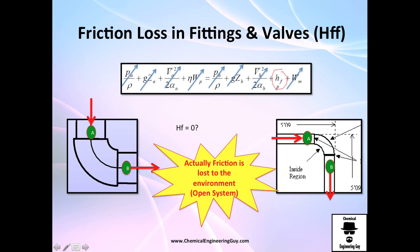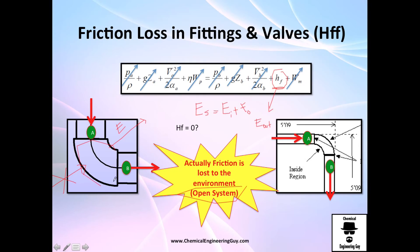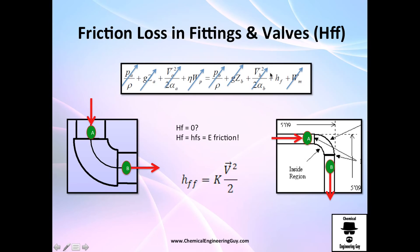The interesting part is that this HF term represents energy going out of the system. This is an open system, so energy goes in and energy goes out. The energy going out is what we call friction loss. We are losing energy to the surroundings as heat due to friction, and that makes complete sense. Don't get confused — friction loss is simply energy lost to the outside.